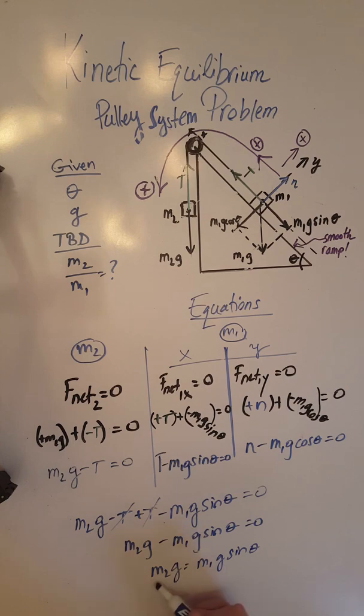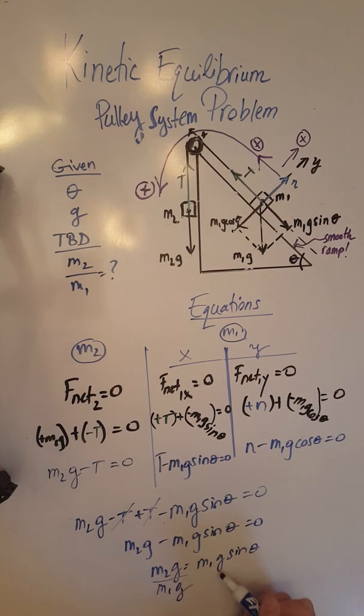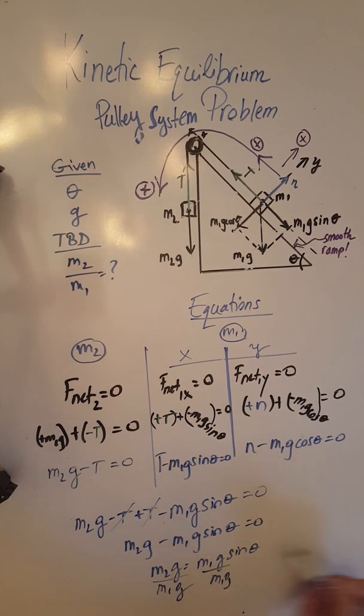Dividing both sides by M1g, we arrive at the final result: M2 over M1 equals sin theta.